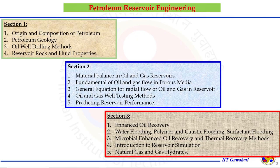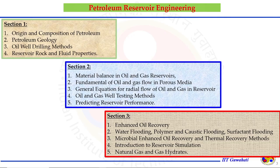Once we have the set of equations, we will test the oil and gas well and predict the reservoir performance. In Section 3, we will understand the enhanced oil recovery mechanism. After primary recovery, when the oil is not getting produced from the reservoir, we implement secondary recovery — mostly water and gas injection — or enhanced oil recovery, where different schemes are implemented to recover the crude oil, for example, polymer, surfactant, microbial, thermal, and others. At the later stage, I will give a brief introduction to reservoir simulation, followed by the unconventional production of natural gas.